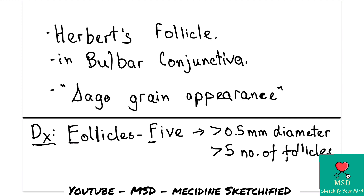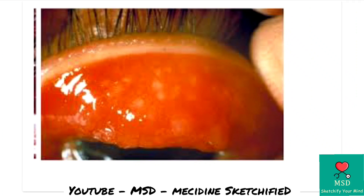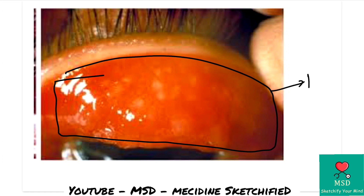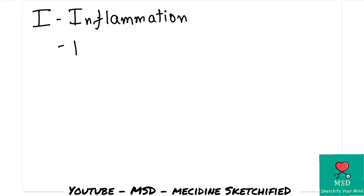In the next stage, the whole palpebral conjunctiva appears reddish, representing inflammation. In FISTO staging, I stands for inflammation. There will be formation of papillae. An important diagnostic criterion for the I stage is that at least 50% of the palpebral conjunctiva should be involved.